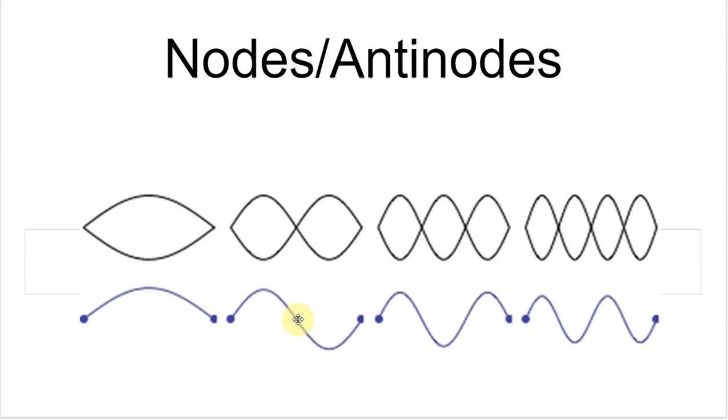These points that are not moving are what we call nodes. Now, anti means opposite, so these points that move the most are what we call antinodes.